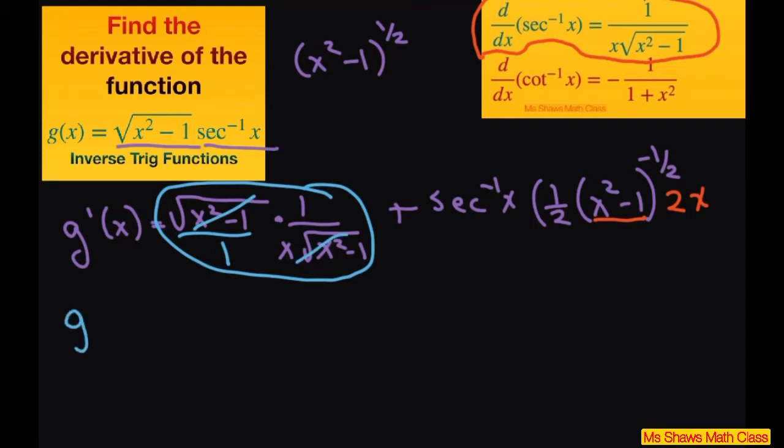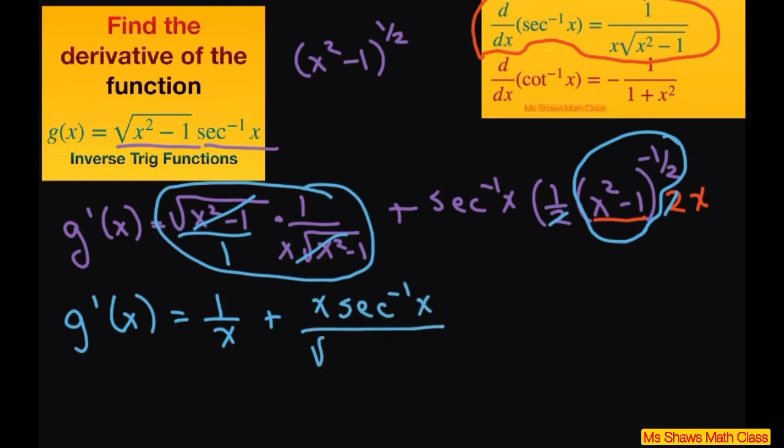Now this part, I can cancel out the twos here, and this is going to go in the denominator. So this is going to give me x times secant inverse of x divided by the square root of x squared minus 1.